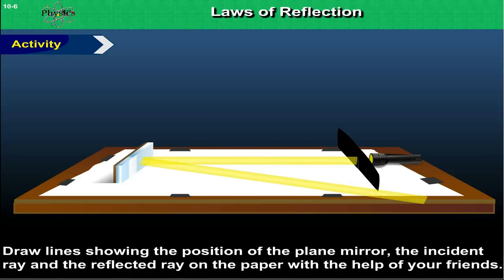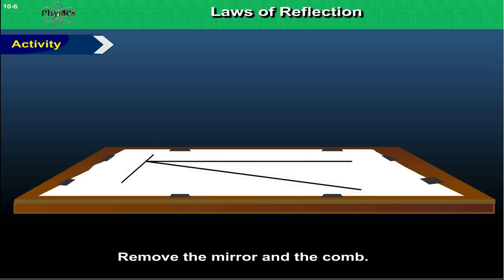Now draw lines showing the position of the plane mirror, the incident ray and the reflected ray on the paper with the help of your friends. Remove the mirror and the comb.